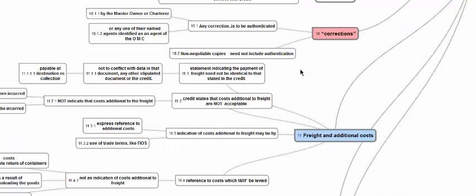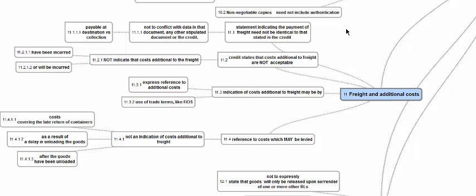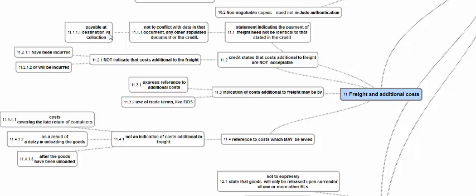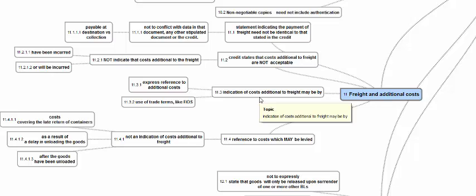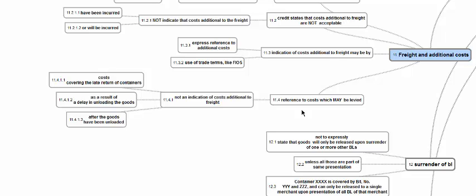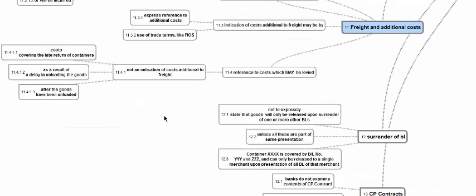Non-negotiable copies of the Charter Party need not be authenticated, because non-negotiable copies are not transfer documents in the strict sense. Regarding freight and additional costs: a statement indicating payment of freight need not be identical to that stated in the credit. If the credit calls for 'freight prepaid,' the transport document may say 'freight payable at the loading port.' If the credit states that costs additional to freight are not acceptable, then the transport document must not indicate that such costs have been or will be incurred — whether by express reference to additional costs or by use of trade terms. However, a reference to costs that may be levied — such as costs covering late return of a container as a result of delay, costs related to unloading of goods, or costs arising after the goods have been unloaded (e.g., detention and demurrage charges) — are not considered as costs additional to freight.